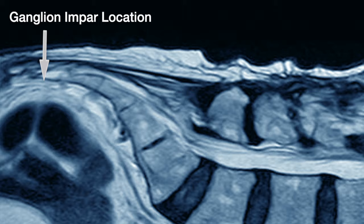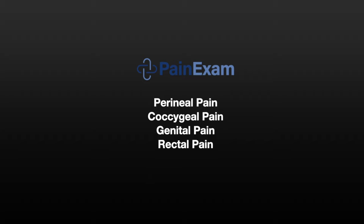The ganglion impar is located anterior to the coccygeal bones. A blockade of the ganglion impar can treat perineal pain, coccygeal pain, rectal pain, and genital pain.